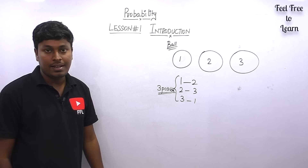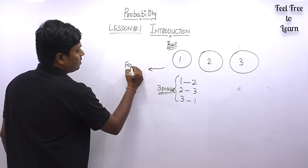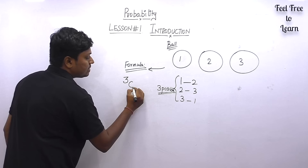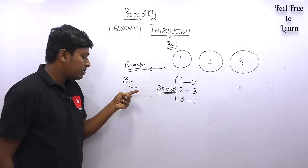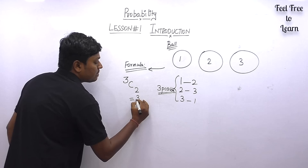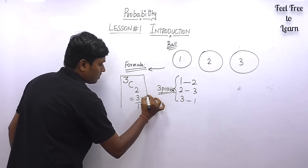This can be written in terms of a formula as 3C2, where C denotes combination. The number three is the total number of balls and two denotes our target — to pick two balls. So 3C2 can be written as: reduce 3 two times, giving 3 into 2, divided by 1 into 2.